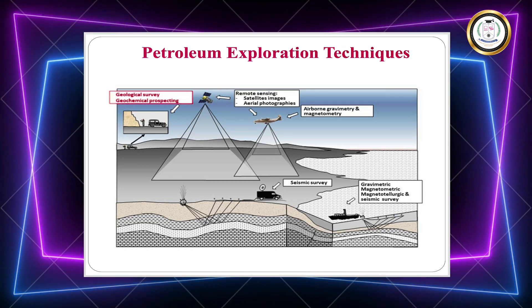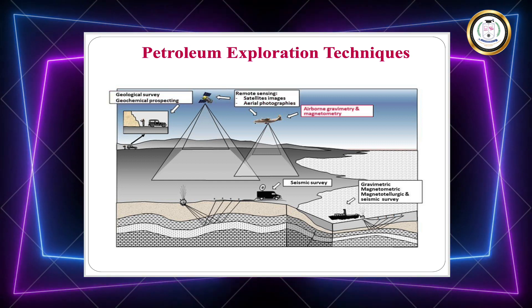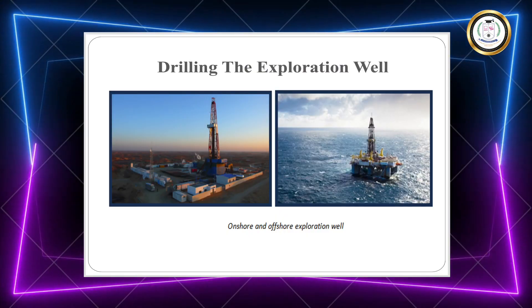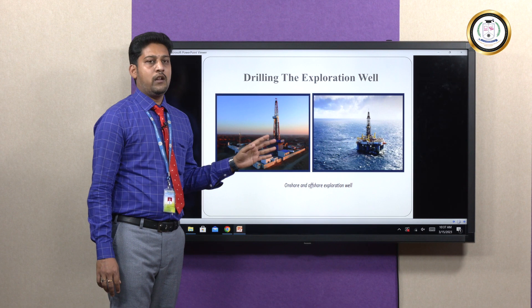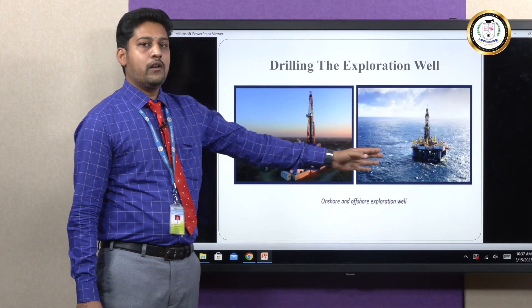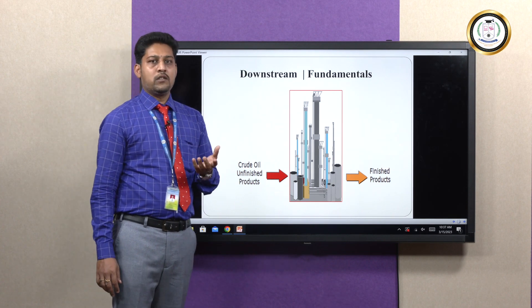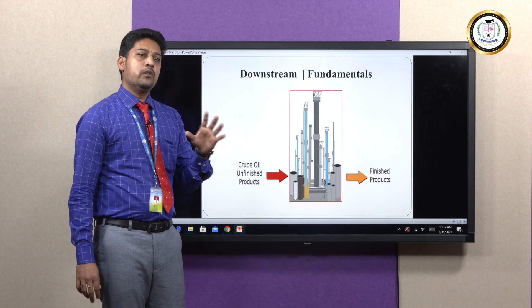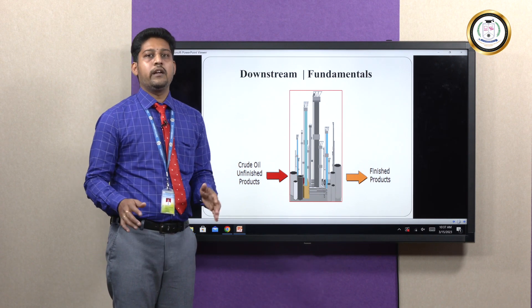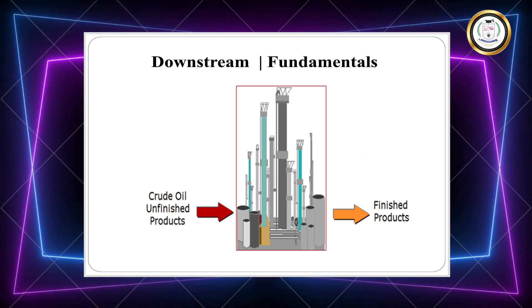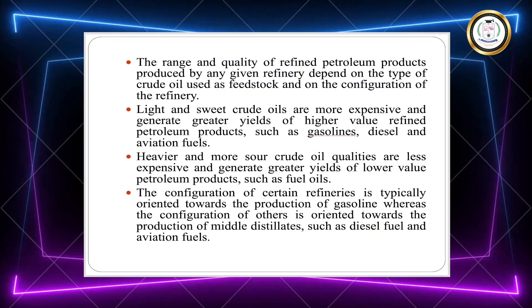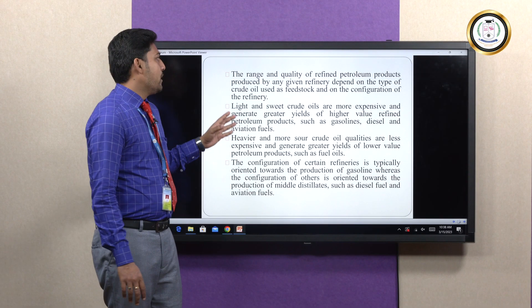Various techniques involved in the exploration process include geological surveys, geochemical surveys, remote sensing surveys, magnetometric surveys, gravimetric surveys, and seismic surveys. Two types of drilling are used: onshore drilling on land surface and offshore drilling on sea surface. After the exploration process, the crude oil is collected and stored, then transported via the midstream process to enter downstream for conversion into the many products we use in day-to-day life.